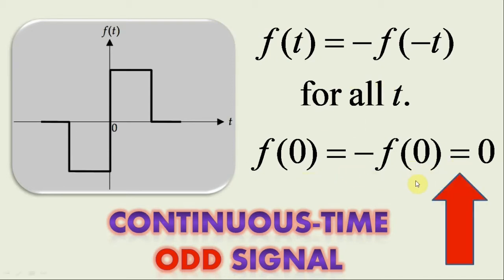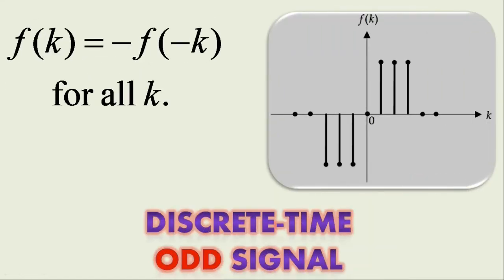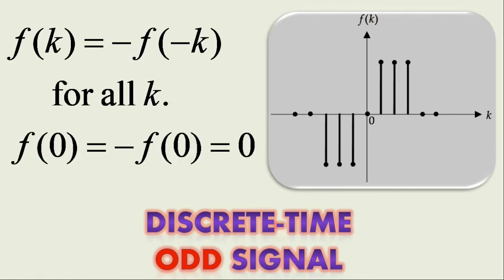On the other hand, a discrete time signal F(k) is said to be an odd signal if it satisfies the condition F(k) = -F(-k) for all k. Here also, it is worth mentioning that a discrete time odd signal must necessarily be zero at k = 0.